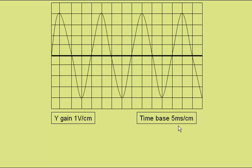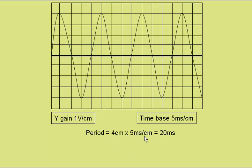A time base of 5 milliseconds per centimetre, and a period from here to here of 4 centimetres, giving a period of 4 centimetres times 5 milliseconds per centimetre, or 20 milliseconds. Frequency is 1 over time period, which is 50 hertz.